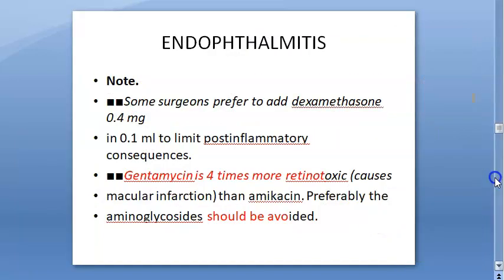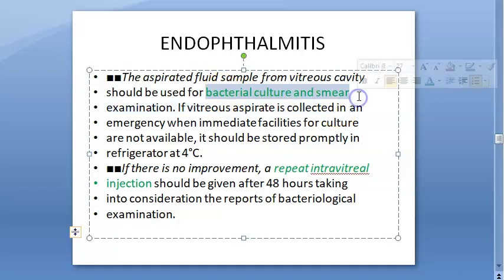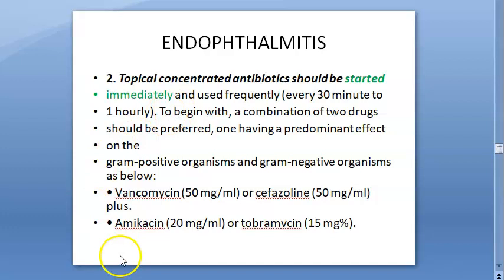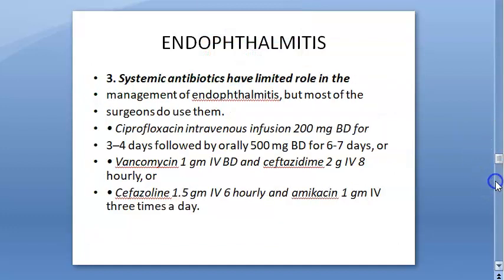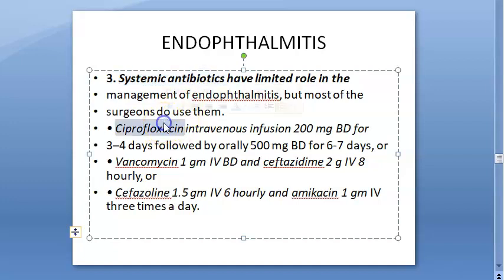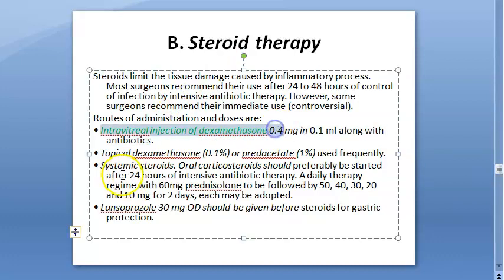If there is no improvement, intravitreal injections are repeated. A sample is collected for endobacterial culture and smear. Topical concentrated antibiotics are also given — vancomycin, cefazolin, amikacin, and tobramycin. Systemic antibiotics have a limited role; ciprofloxacin and vancomycin are options. Steroid therapy includes intravitreal dexamethasone, topical dexamethasone, and systemic steroids. Lansoprazole is given before steroids for gastric protection.